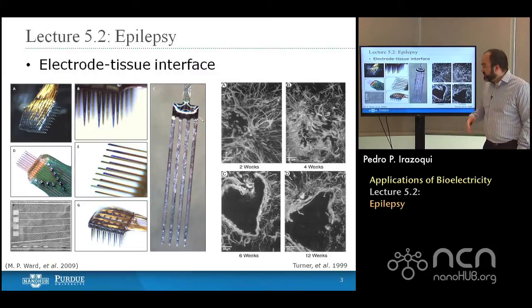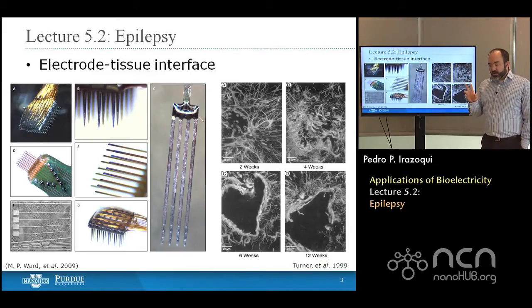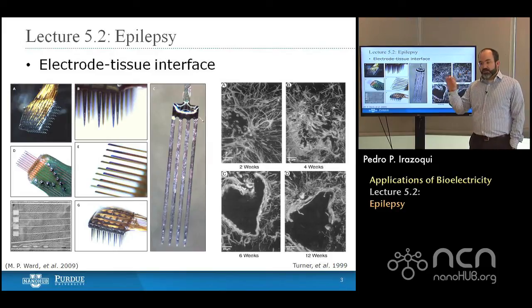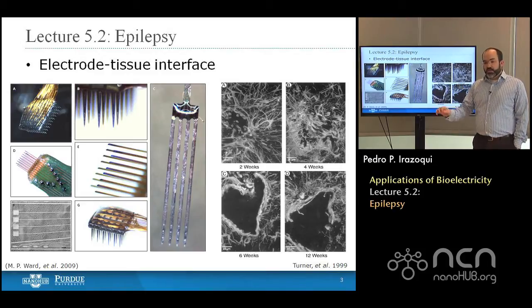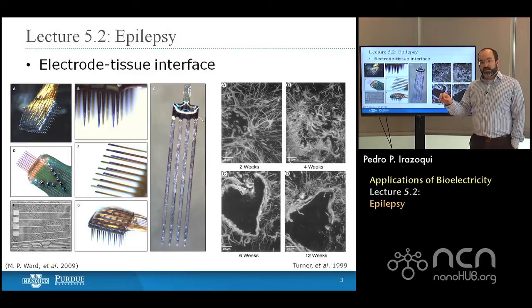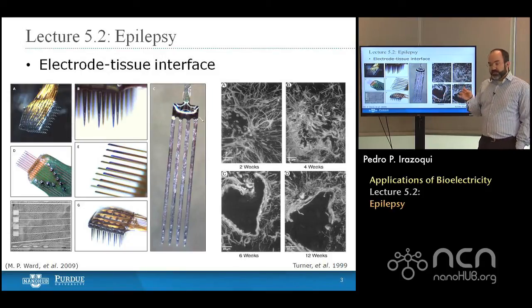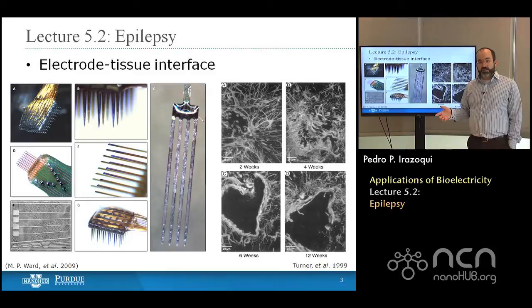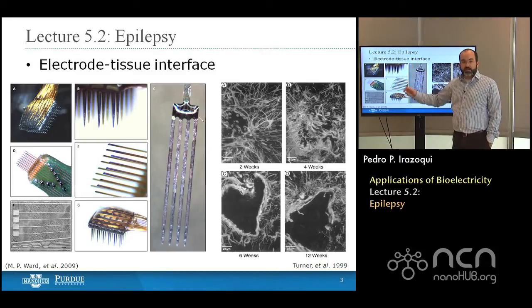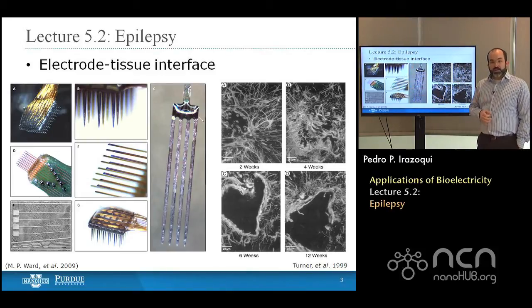Before we talk about how we're going to do something about epilepsy, we need to acknowledge that stimulating for epilepsy is different from Parkinson's. Instead of wanting to stimulate the subthalamic nucleus all of the time, in epilepsy we want to stimulate responsibly. We want to record the activity in the brain, detect a seizure, and then stimulate to stop that seizure before it spreads. That means we need an interface with the brain to record from it, and there are many commercially fabricated electrodes available for recording data from the brain.